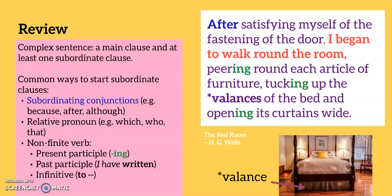Once you've read the sentence, look for the main clause because this is what the sentence is about. 'I began to walk round the room' makes sense by itself, so it's the main clause. The other clauses are subordinate or dependent clauses because they don't make sense by themselves and they need the main clause for us to understand them.